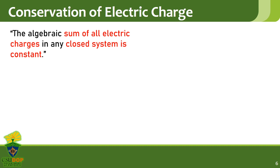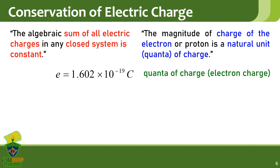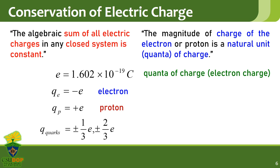The natural unit, or quanta of charge, is the magnitude of the charge of an electron. It is denoted by the symbol e, and has a magnitude of 1.602 × 10⁻¹⁹ coulombs. An electron then has a charge of negative e, while a proton has a charge of positive e. Quarks, on the other hand, have fractional charges with respect to e.